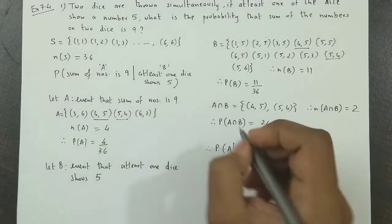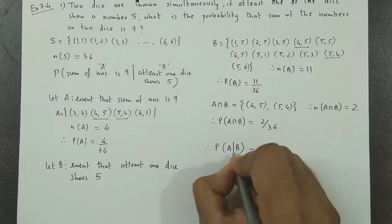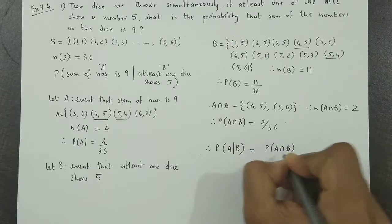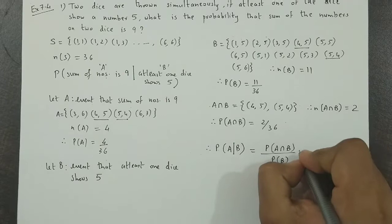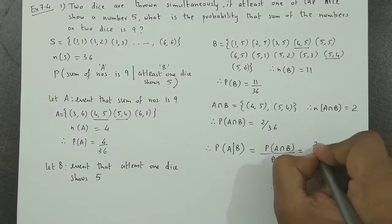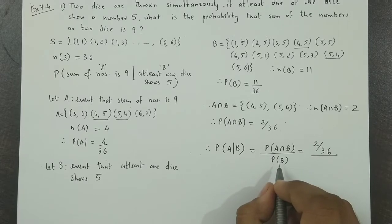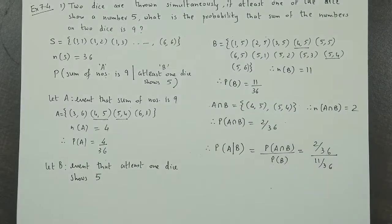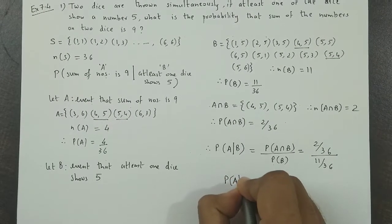Now what we have asked: probability of A given B. So the formula for this is P(A intersection B) divided by probability of B. Now A intersection B's probability is 2/36, and B's probability is 11/36. 36 cancels out, so we have P(A